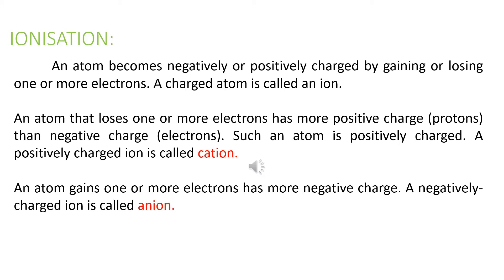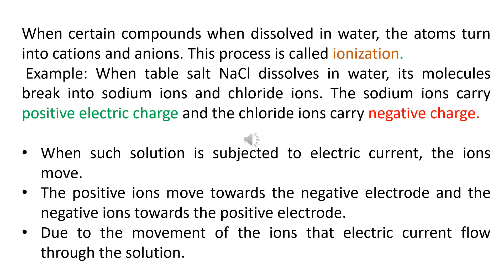Whereas when an atom gains a negative charge from some other atom, it becomes more negative, and we call it a negatively charged ion — an anion. So when an atom loses a negative charge it becomes more positive, making it a cation; when it accepts those negative charges it becomes more negative, making it an anion. We need to understand ionization even in the context of metals and non-metals.